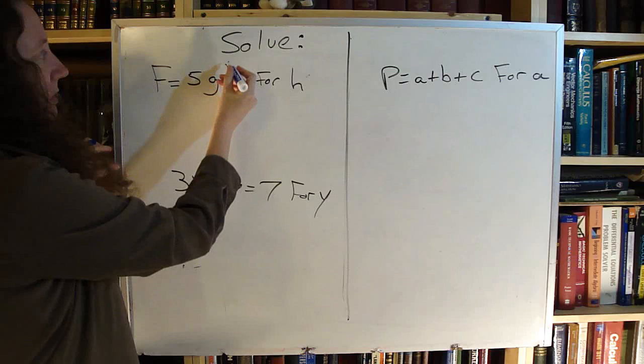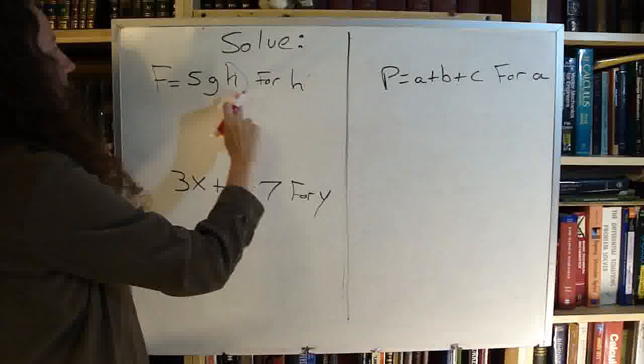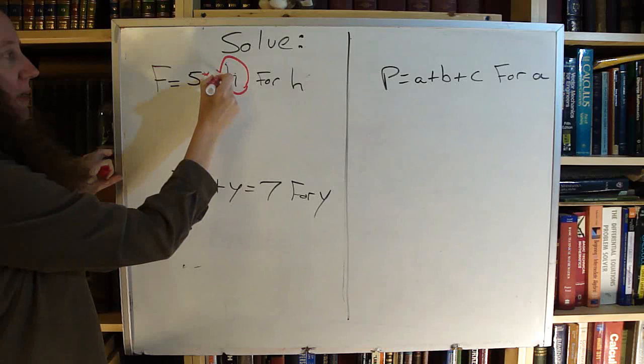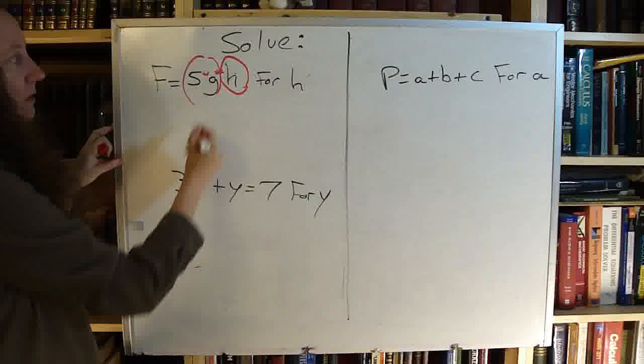So I'm looking for H. There's my H. It might be easier to see if I use a different pen. There's my H. So I want to get rid of the 5 and I want to get rid of the G. Both of those are being multiplied by the H.